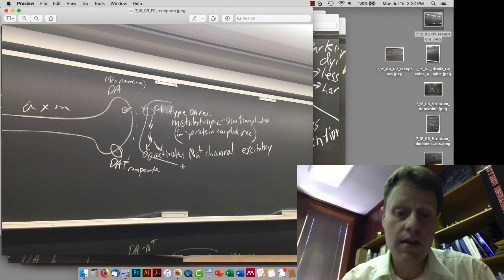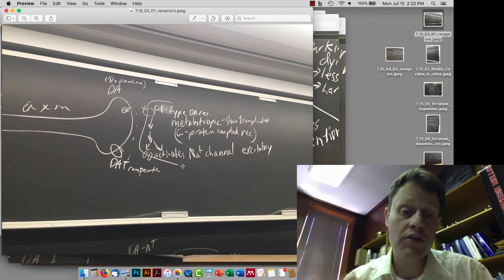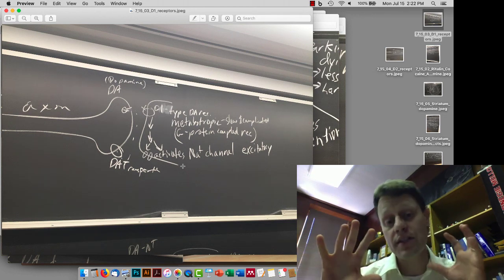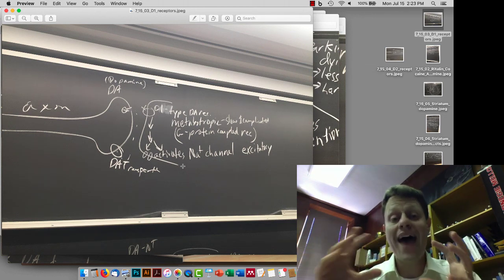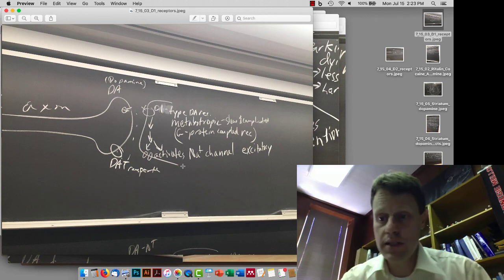It does a lot of different things, but one of the things that it does is activate sodium channels, and that makes D1 receptors excitatory. So when dopamine is released and the receiving cell has a D1 receptor, that signal is going to excite the receiving cell.